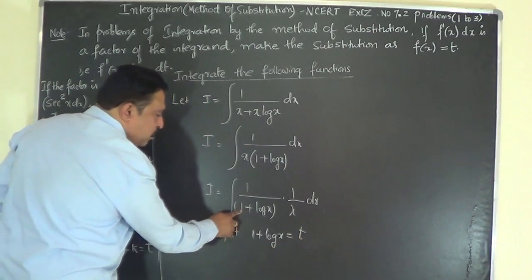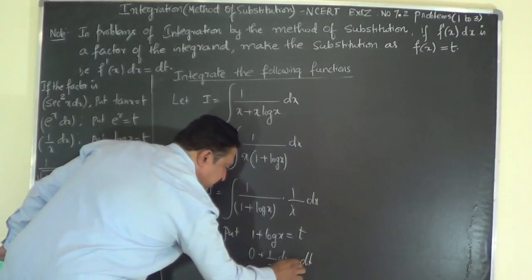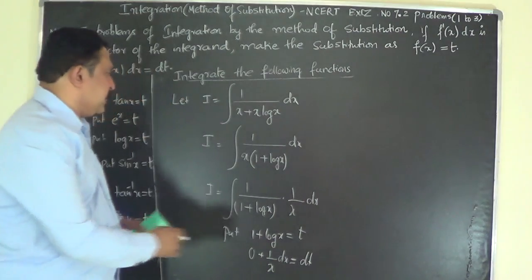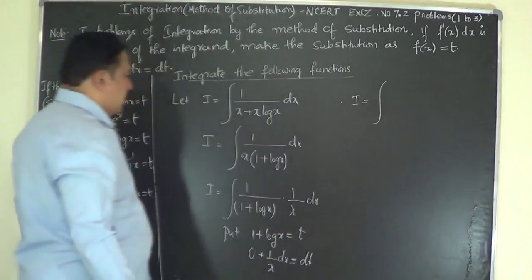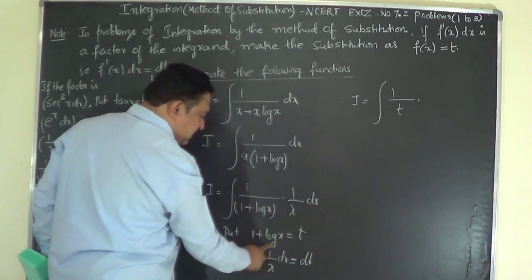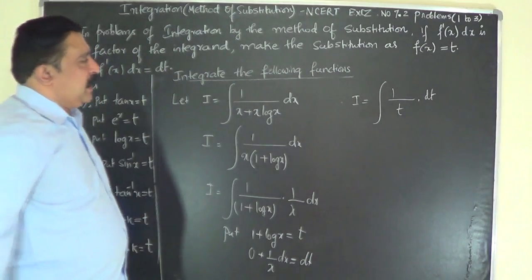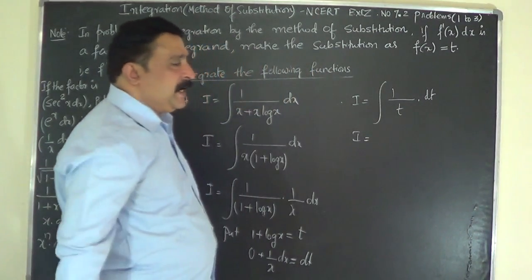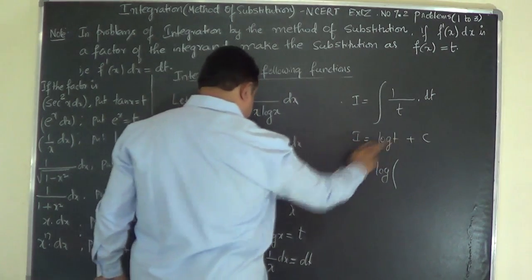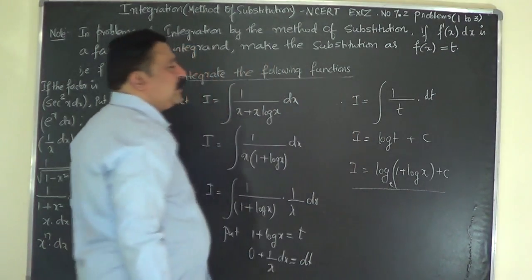Differentiating 1 + log x = t: the differential of 1 is 0, so 0 + 1/x dx = dt, meaning 1/x dx = dt. Therefore the problem becomes I = ∫ [1/(1 + log x)] · (1/x dx) = ∫ (1/t) dt = log t + C. Substituting back t = 1 + log x: I = log(1 + log x) + C (to the base e). That is the answer to the third problem.